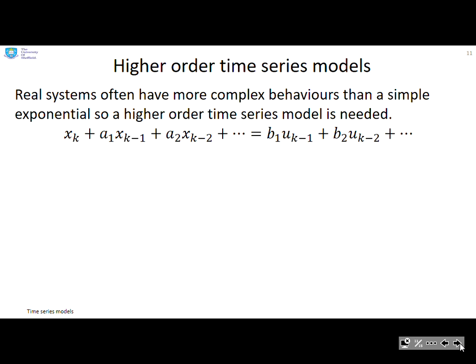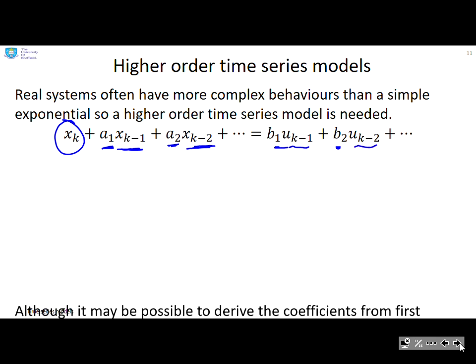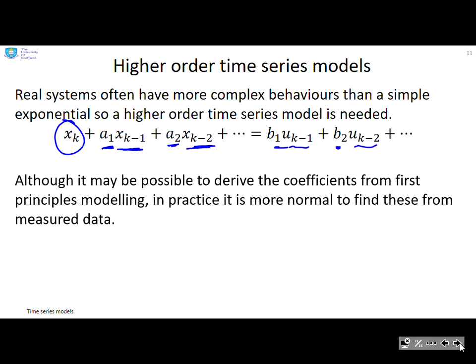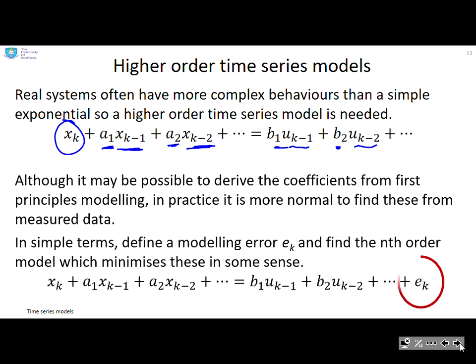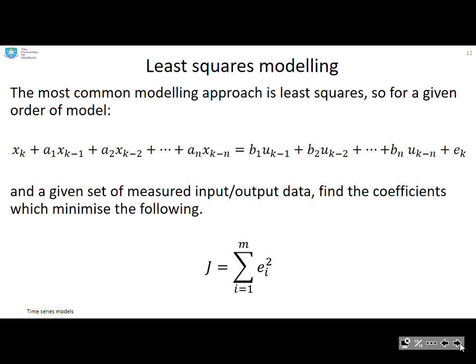What then if you have higher order time series models? So in general, your time series model will have lots of coefficients. You can see here I've got a_1, a_2, b_1, b_2. And you'll see the dependence links to a lot more variables. So the current value of x depends on the previous value, the value two samples ago, the value three samples ago, and also on the inputs one sample ago, two samples ago, and so on. Now, it might be possible to derive the coefficients from first principles modelling. But in practice, people usually get these from measured data. So what we do is we focus on this e term. So the error between this bit and this bit. So what we're saying is if we can choose the coefficients such that that error is small, then the likelihood is those coefficients represent our system.